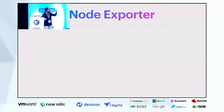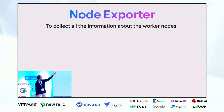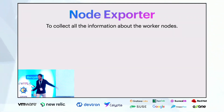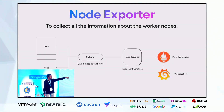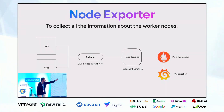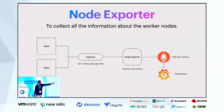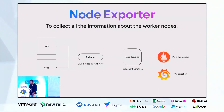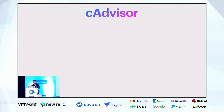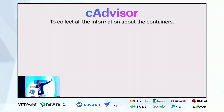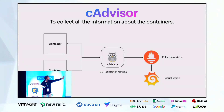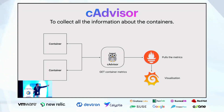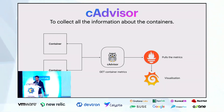Node exporter, as the name suggests, generates metrics about the worker nodes. The collector gets metrics from the APIs and node exporter exposes them; we pull via Prometheus and generate visualizations using Grafana. Similarly, cAdvisor generates metrics and information on containers — we pull using Prometheus and visualize through Grafana.